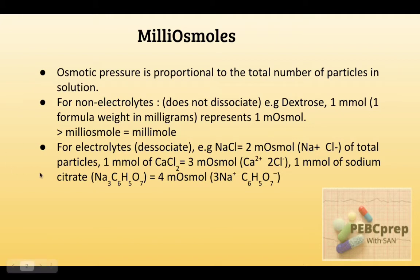Sodium and chloride are the total particles in solution. If we have one millimole of calcium chloride, we have one calcium and two atoms of chloride, so two plus one is three milliosmoles. Similarly, one millimole of sodium citrate gives four milliosmoles — three atoms of sodium and one atom of citrate. For electrolytes, you have to be very careful when doing milliosmoles questions. For non-electrolytes, one millimole equals one milliosmole.